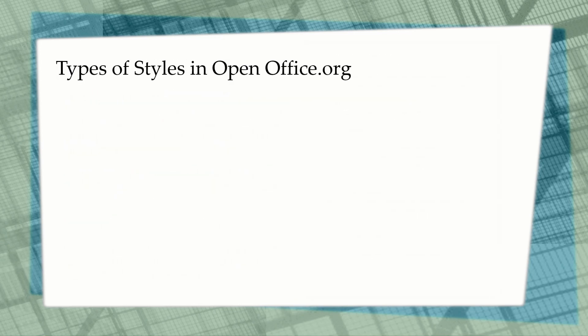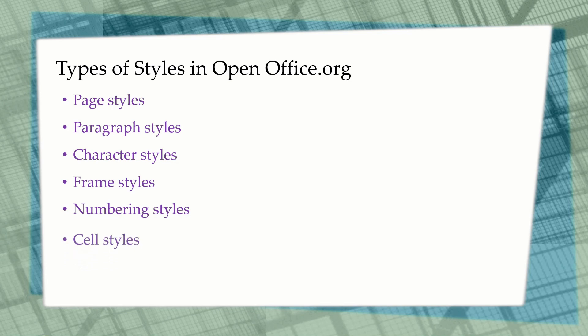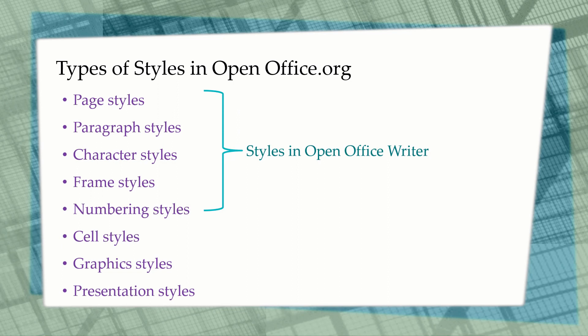There are different types of styles in OpenOffice.org: page styles, paragraph styles, character styles, frame styles, numbering styles, cell styles, graphic styles, and presentation styles. The first five styles are available in OpenOffice.org Writer, so we will be discussing and using these five styles.